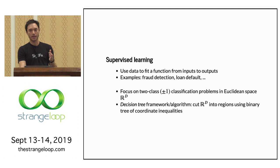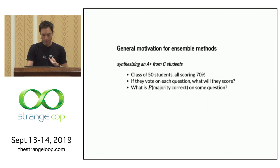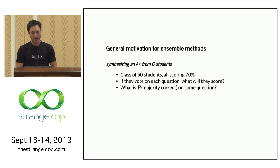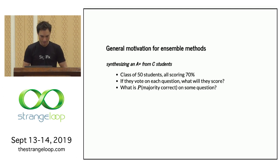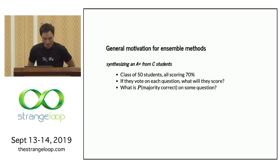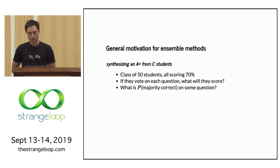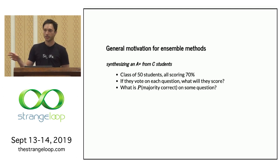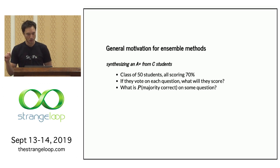A single decision tree is generally terrible at making decisions. So there's interest in using them as a basis for forming better classifiers. As a general motivation for ensemble methods: if you have a class of 50 students who all score about 70% on a true-false exam, and you allow them to vote on each question and take the majority vote as the answer, what will they score?